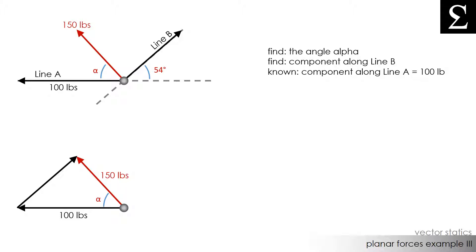Now, I know that the angle arrow B makes with the horizontal line is 54 degrees, so I can add that here.